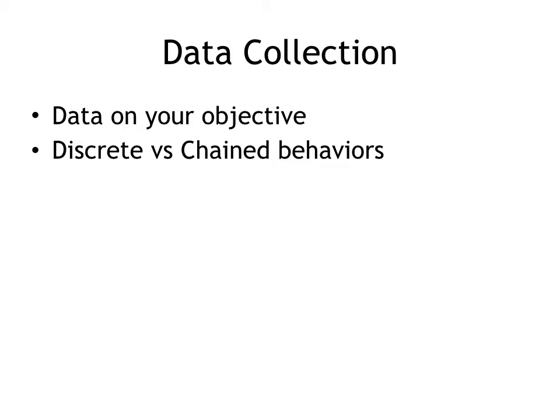For example, if my objective is 'Chase will verbally state the items requested with 100% accuracy,' then my criteria already tell you the data collection system, which is percentage. Another example: if my objective is 'Chase will verbally request the item at least five times during 30-minute reading time,' then my criteria already said five times, so I can collect my data using frequency.